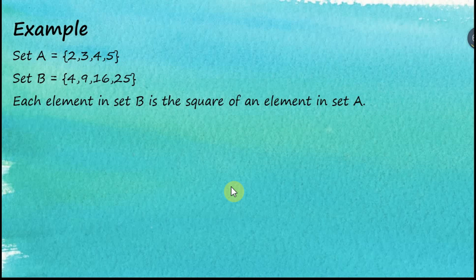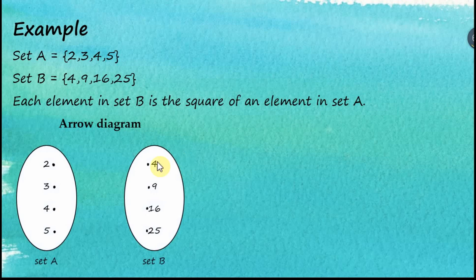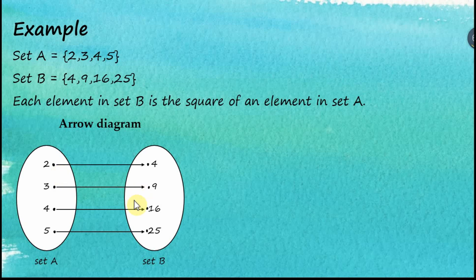Let's see this example. We have two sets of numbers: set A has 2, 3, 4, 5, and set B has 4, 9, 16, 25, where each element in set B is the square of an element in set A. For the arrow diagram, we start with two ovals, list the numbers inside each oval, draw arrows mapping numbers from set A to set B, and then label the relationship, which is 'the square of.'